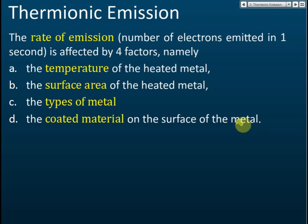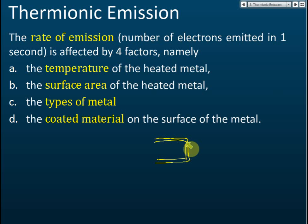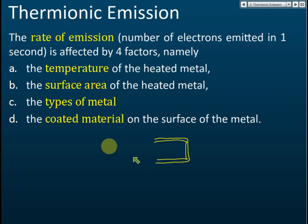The last factor is the coated materials on the surface of the metal. You take a piece of metal and coat it with another material — sometimes an oxide of a metal — and this may allow it to release more electrons per second. We'll discuss in detail how temperature, surface area, type of metal, and coated materials each affect the rate of emission.